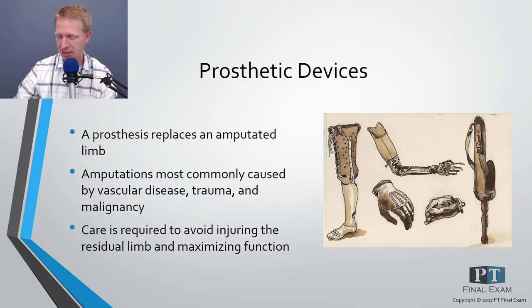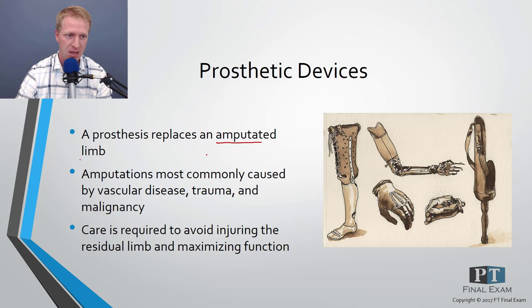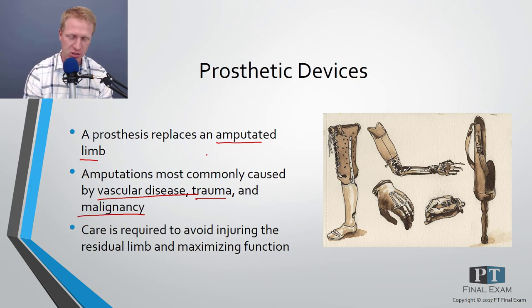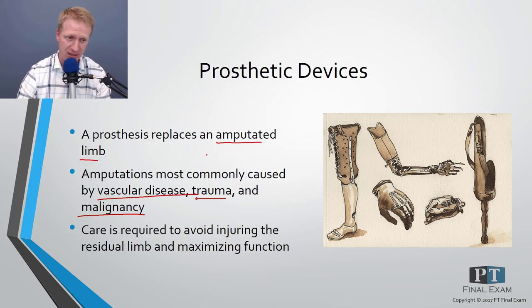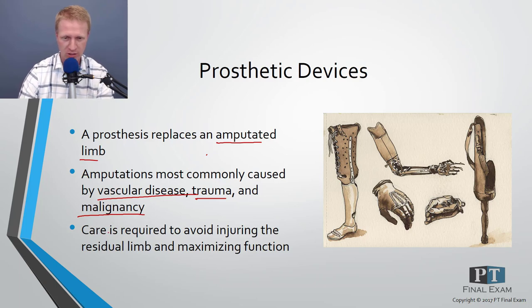Prosthetic devices are categorically used to replace or assist with an amputated limb. Most commonly, we're dealing with individuals with some sort of vascular disease, trauma, or malignancy. Almost always we have individuals with some sort of comorbidity in addition to the prosthesis and the residual limb we're working with — though in the case of trauma it could be very isolated.